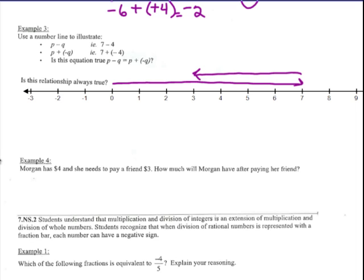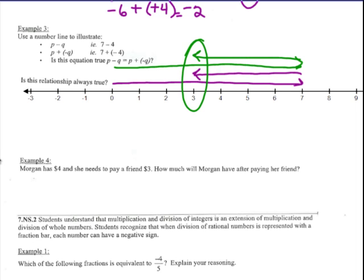Use a number line to show 7 plus negative 4. Go over to 7, then adding a negative means going to the left — not to the right. Going left 4 gets us again to positive 3. So 7 minus 4 equals positive 3, and 7 plus negative 4 also equals positive 3. Subtracting p minus q is the same thing as adding p and negative q — that's the subtraction rule: change it to add the opposite.